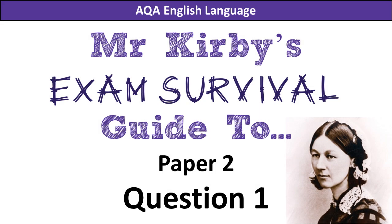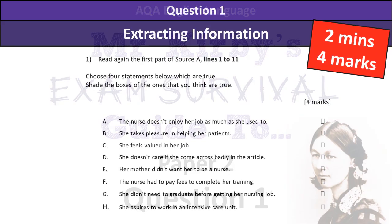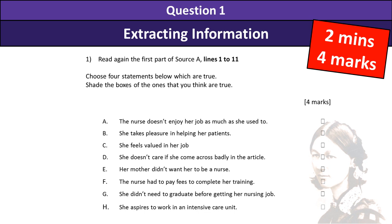Hi there, so this is a little recap of the Language Paper 2 for AQA and Question 1. So you've sat down in your Paper 2, you open up the first page and you're going to come to this Question 1 and it's going to have some multiple choice options for you. It should be quite straightforward but you wouldn't believe the number of students that rush it, don't take the time and end up getting a worse mark on this than they do Question 1 in Paper 1, which has got no multiple choice. This one should be even easier.